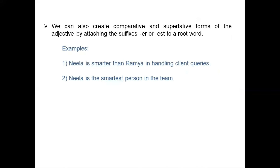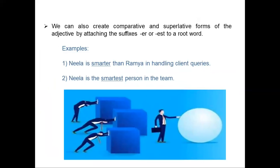We can also create comparative and superlative forms by adding 'er' or 'est' at the end of a base word. For example, 'smart' — adding 'er' creates 'smarter': 'Neela is smarter than Ramya in handling client queries,' which is a comparative sentence. Adding 'est' creates 'smartest': 'Neela is the smartest person in the team,' which is a superlative form.